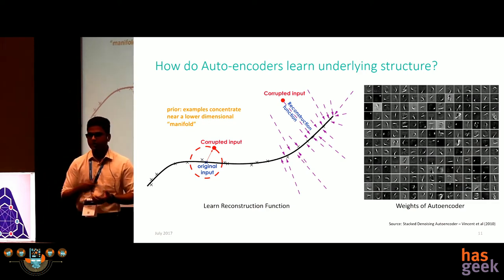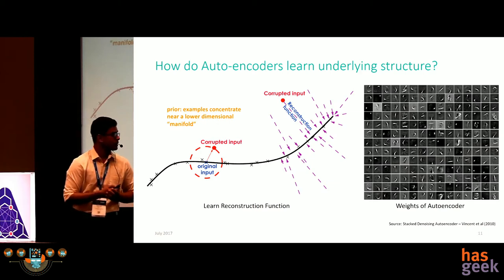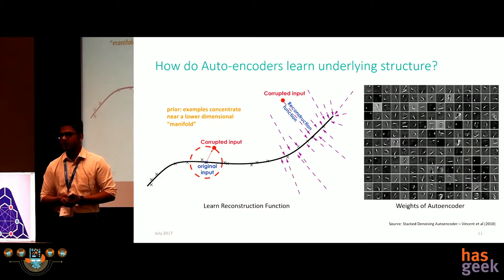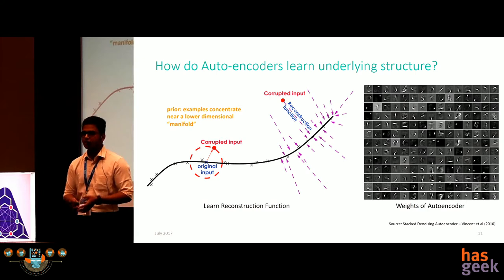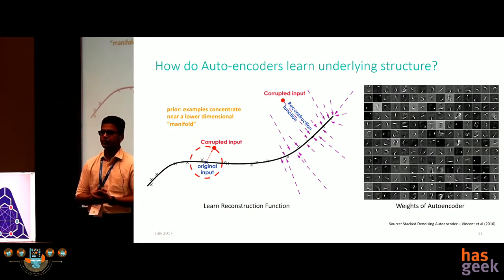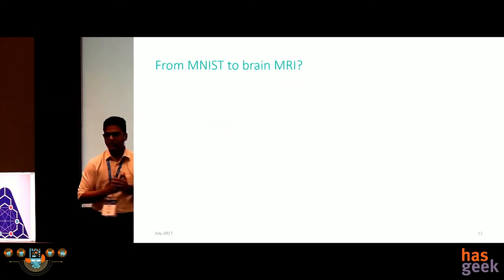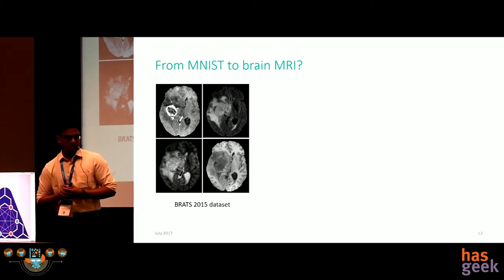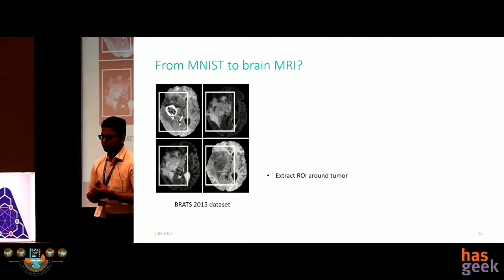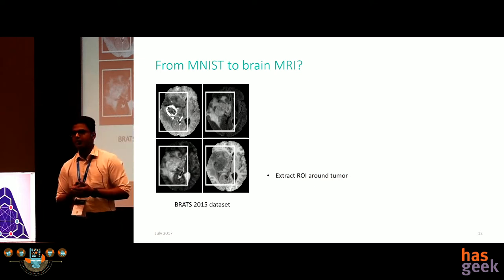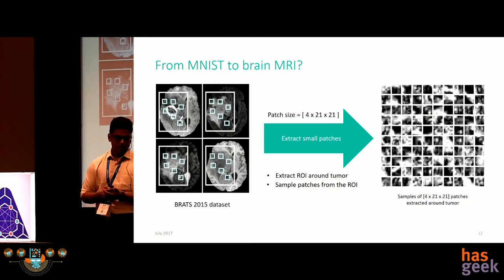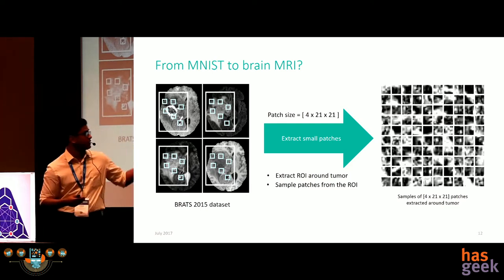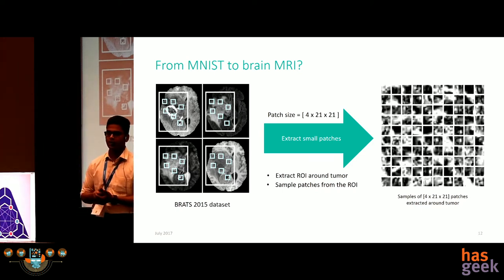How do we convert this to brain MRI? We have four sequences of 3D MRI. To alleviate data imbalance, we extract ROIs around the tumor and sample small patches. We extract 4×21×21 patches — 4 corresponds to the 4 MRI sequences — and stack them on top of each other. To summarize: you extract the patch, noise it by dropping around 20% of the pixels, and ask the autoencoder to reconstruct the original input. The training mantra is: extract, noise, reconstruct — until convergence.